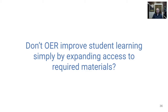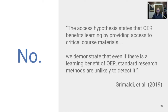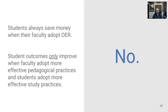You might ask: don't OER improve student learning simply by expanding access to required materials? Intuitively that makes sense, but in a study published by Phil Grimaldi and researchers from OpenStax, they demonstrate that this access hypothesis — which states that OER benefits learning by providing access to critical course materials — isn't supported. Even if there is such a benefit, it's likely so small that standard research methods aren't able to detect it. Students will always save money when their faculty adopt OER, but student outcomes will only improve when faculty adopt more effective pedagogical practices and students adopt more effective study practices. That's when learning improves.